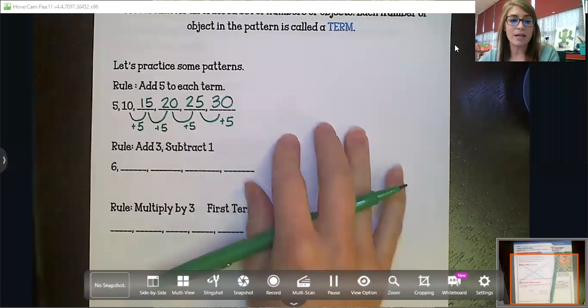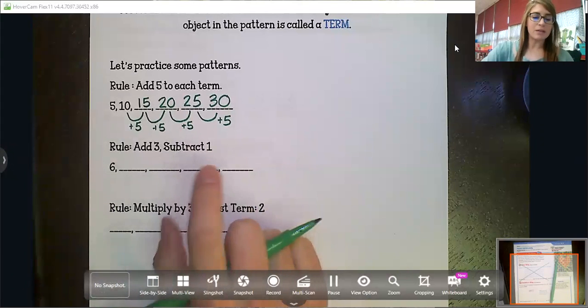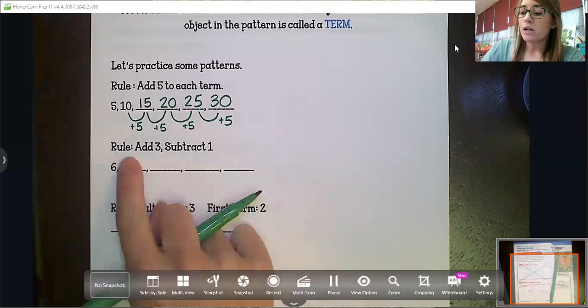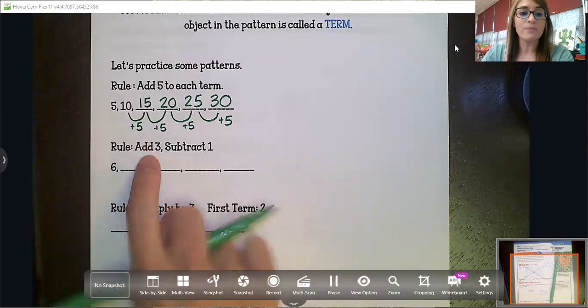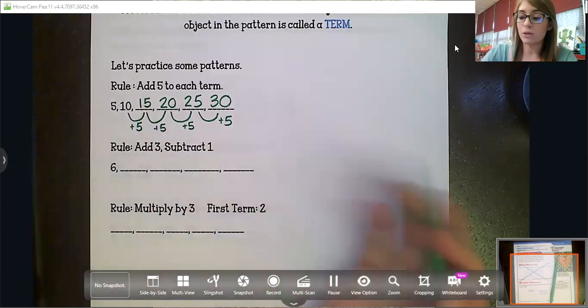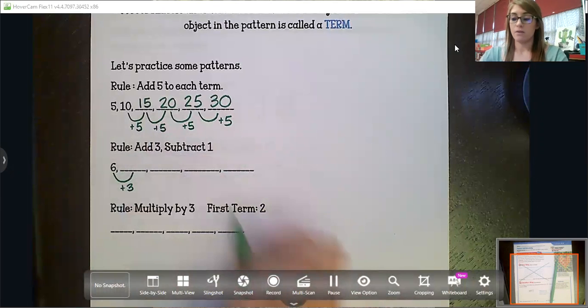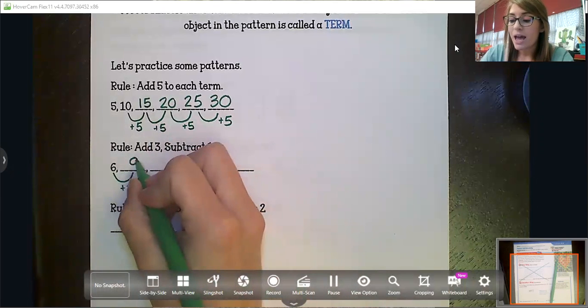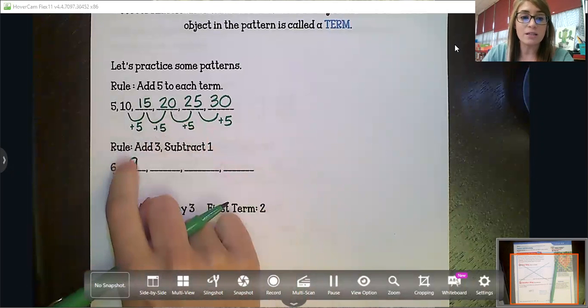Another example is sometimes they get it a little bit more difficult. Still not super hard, but sometimes they try to throw you off. So this rule has two parts. First, we're going to add three and then we're going to subtract one. Now we are not doing that in the same step. We're going to do it like this. So we're going to first add three. So six plus three is nine. And then we're going to subtract one from this term.